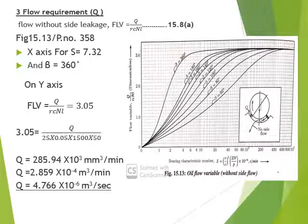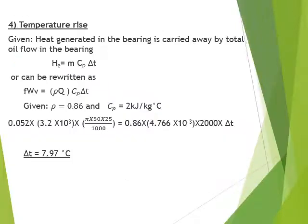For flow requirement, using S on the x-axis with β = 360°, the flow variable Q/(R·C·N·L) along the y-axis equals 3.05. Substituting all known values, the flow requirement Q = 4.766 × 10⁻⁶ m³/s.